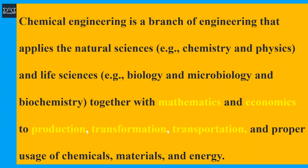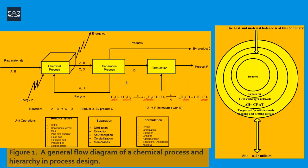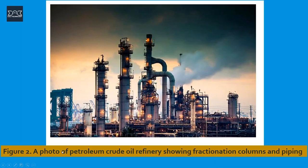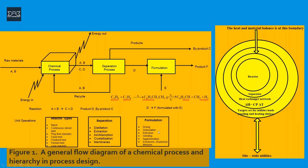Chemical engineers are concerned with processes which convert raw materials into useful products. They are also concerned with pioneering valuable materials related to techniques which are often essential to related fields such as nanotechnology, fuel cells, and bioengineering. Looking at this slide, there is a general flow diagram of a chemical process and hierarchy in process design, whereby we've got a raw material going through to a chemical process to convert raw materials into products.